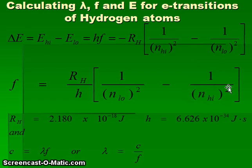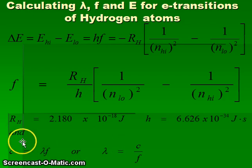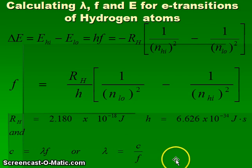The speed of light c equals the wavelength lambda multiplied by the frequency. Using algebra, we can rearrange to solve for wavelength lambda, which equals c divided by the frequency. Please note that an alternate symbol for frequency looks like a v — some websites and books use that symbol as opposed to f.